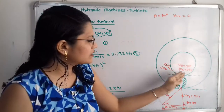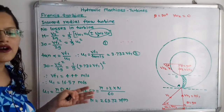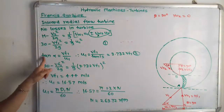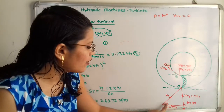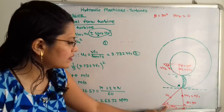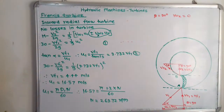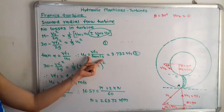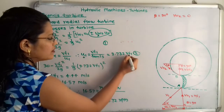Since Vf1 equals Vf2, we substitute Vf1 into the equation. From the velocity diagram, tan(alpha) equals Vf1/u1, so u1 equals Vf1/tan(15°), which gives u1 equals 3.732·Vf1. We substitute this into equation 1, giving 30 minus Vf1²/2g equals (1/g)·(3.732·Vf1)². Solving, Vf1 equals 4.44 m/s.